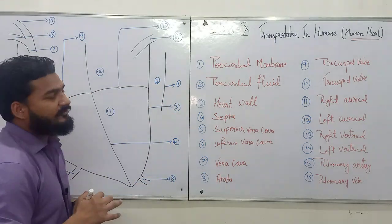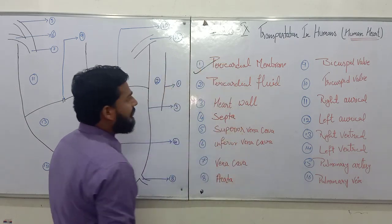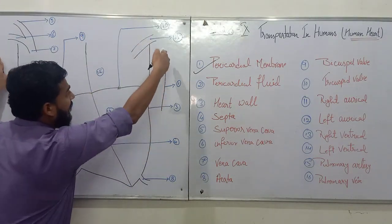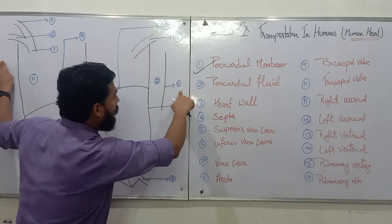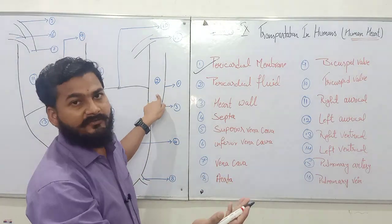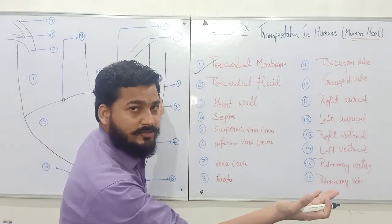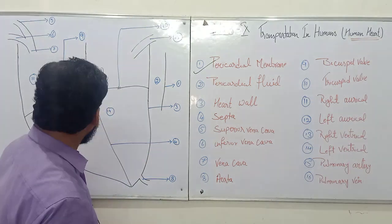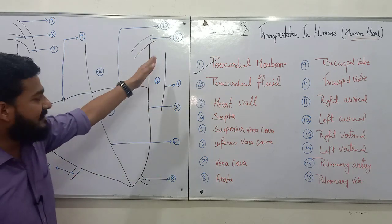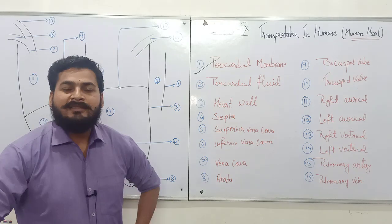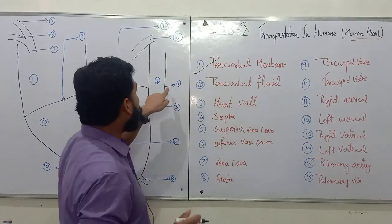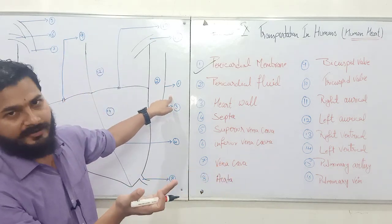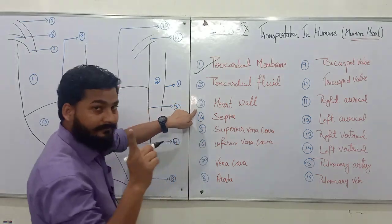The first component we are going to talk about is the pericardial membrane, labeled number one. You can see the complete structure of the human heart and there is a line I have drawn over here marked number one. Actually this is not a line — this is the outermost protective covering of the human heart. This runs around the whole system as a continuous membrane throughout the structure of the heart.